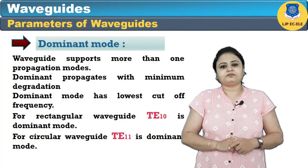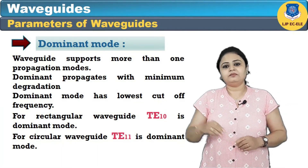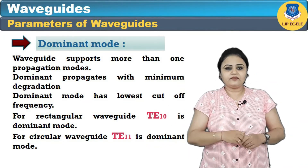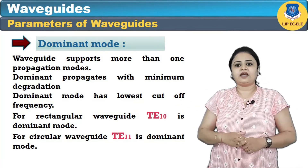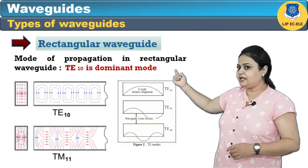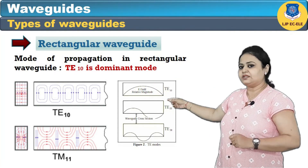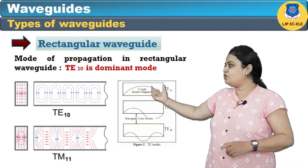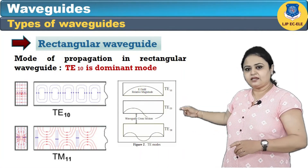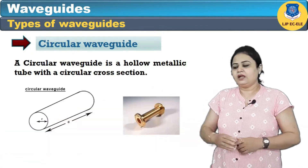A waveguide supports more than one propagation mode. The dominant mode propagates with minimum degradation and has the lowest cutoff frequency. For rectangular waveguide, TE10 is the dominant mode, and for circular waveguide, TE11 is the dominant mode. For example, in TE10 mode, along the a dimension (x direction) there is only one half-cycle; in TE20 there are two half-cycles; and in TE30 there are three half-cycles propagating in the x direction. This is illustrated by the simulation of the rectangular waveguide shown.